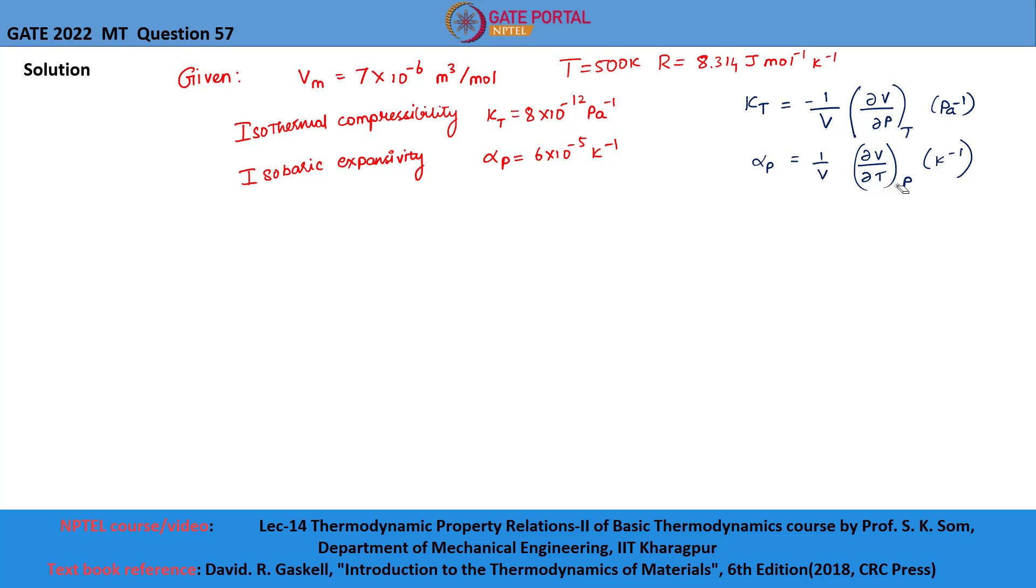So, let us now look at the formula that relates kappa T, alpha P, and volume to Cp and Cv. And the formula is Cp minus Cv equals alpha P squared V T by kappa T.